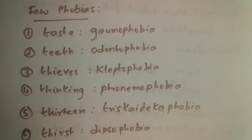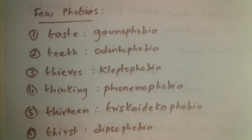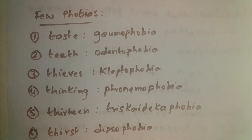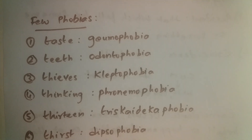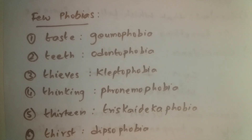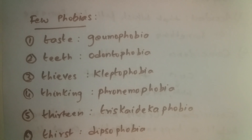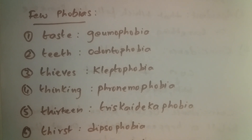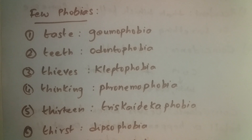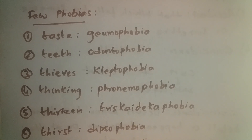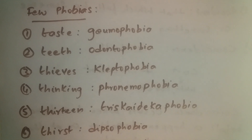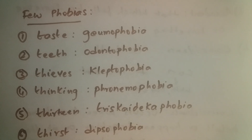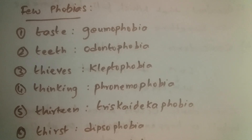In many countries, especially Christian countries, it is considered that Jesus was killed by the 13th disciple. That is the reason they consider the number 13 to be unlucky, so they have a phobia of number 13. That is called triskadekaphobia.